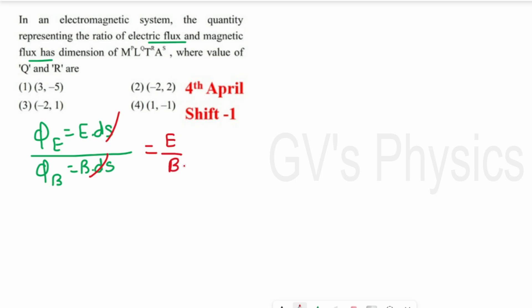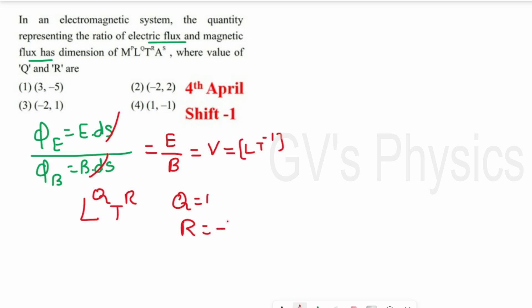With respect to electric field and magnetic field, we have a formula: the ratio E/B equals the velocity of light. We know the dimension formula for velocity is L·T⁻¹. So in the given format L^q · T^r, we get q = 1 and r = −1. Checking the options, Option 4 is the right answer.